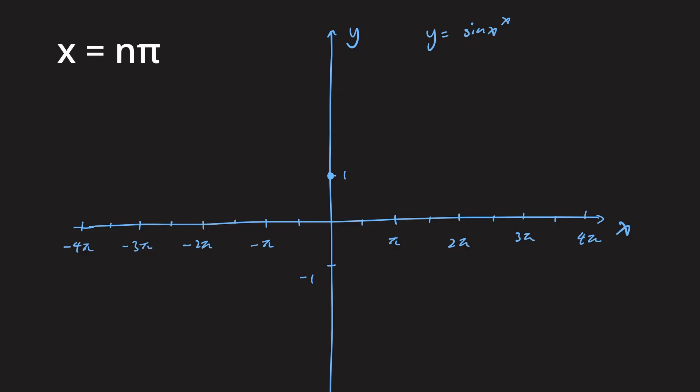For x equal to positive multiples of pi, sin x to the power of x equals 0 to the power of a positive number, which is 0. For x is negative multiple of pi, sin x to the power of x equals 0 to the power of a negative number, which tends to infinity as you are dividing by 0.